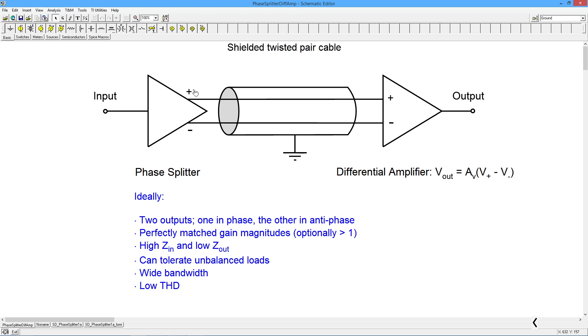The job of this circuit is to take the input signal and then produce two identical outputs in amplitude. The only difference is one of them is in phase with the input, the other is in antiphase with the input. In other words, sine wave in, sine wave out, minus sine wave out. This will then go through a shielded twisted pair cable.